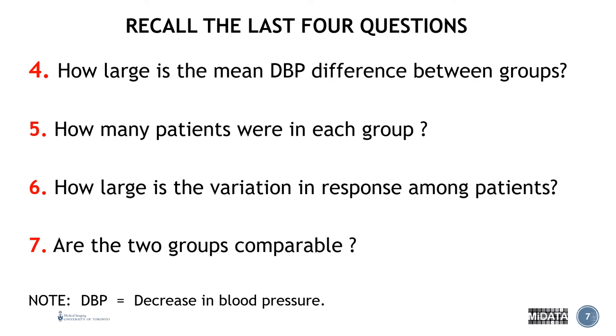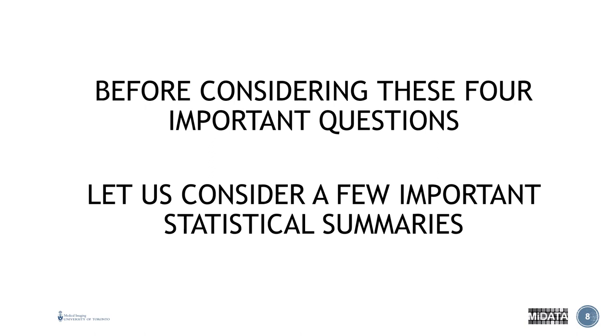Let's move on to the last four questions. Let's just recall them. How large is the mean diastolic blood pressure difference between groups? So now we're asking how big is the difference? How big is the signal? How many patients were in each group? So this is a sample size question that we need to address, which we're just beginning to do so when discussing the T-test. How large is the variation in response among patients? So this is the variability within the data set that we need to be concerned with. And finally, are the two groups comparable? Now, before we jump in to these four questions, let us consider a few important statistical summaries just to build your statistical base.